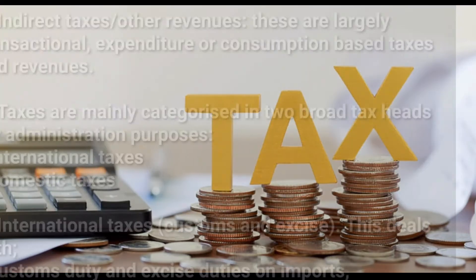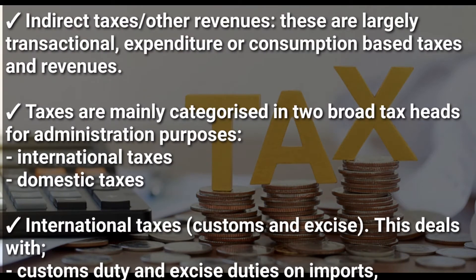Indirect taxes are mainly charged on transactions, expenditure, or consumption. Direct taxes, on the other hand, are charged on someone's income. Taxes are mainly categorized into two broad tax heads for administration purposes.